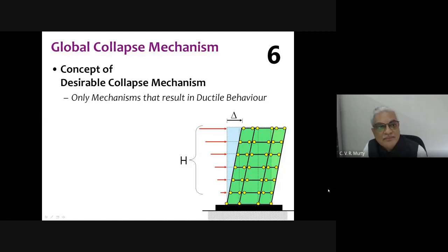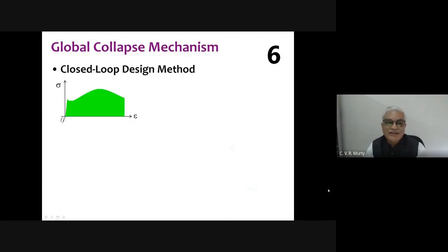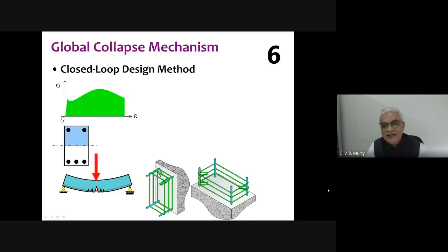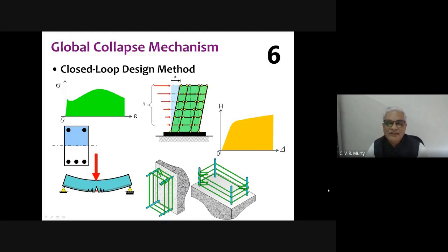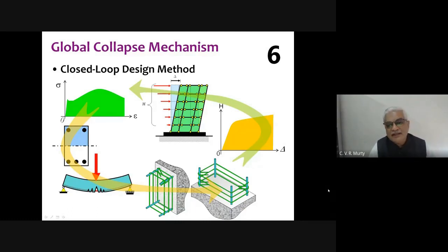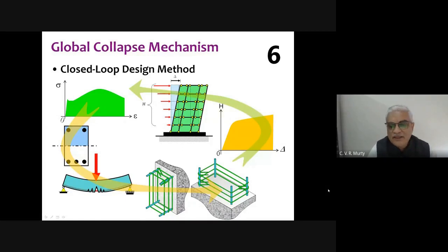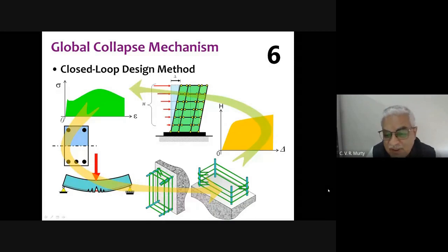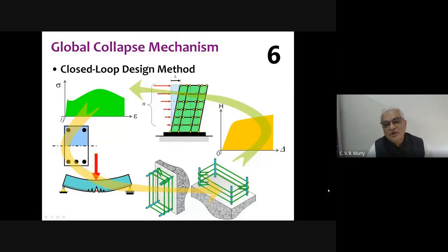We know our material, design sections, design members, do detailing, and construct — that is the forward loop. But we do not do the reverse process: ensuring sufficient deformability and verifying that the collapse mechanism is correct. We are not closing the loop, and that is why collapses will continue in this country. Unlike force-based loads where the maximum is known, earthquake is a displacement load with no upper limit. Even for known deformation demand, we are not guaranteeing that our structure has that deformability — and we need to correct this urgently.